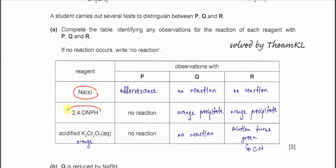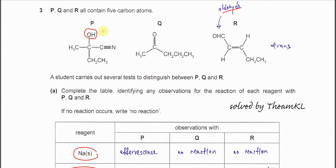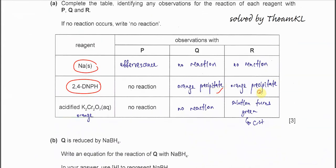The second reagent, 2,4-DNPH. 2,4-DNPH is for the carbonyl groups. P has no carbonyl, so no reaction or no change. Q has one carbonyl here. R also has one carbonyl here. That's why Q and R will form orange precipitate with the 2,4-DNPH.